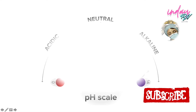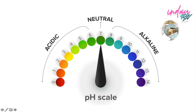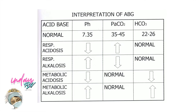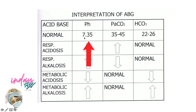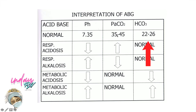Talking about acid-base balances, you should know the level of acidity and the level of alkalinity. Always note that neutral is at 7, so the pH scale is at 7. It is important to note the normal values for the pH, the pCO2, and the bicarbonate or HCO3. For the pH level, the normal is 7.35 to 7.45. CO2 level is 35 to 45. And HCO3 level is 22 to 26.